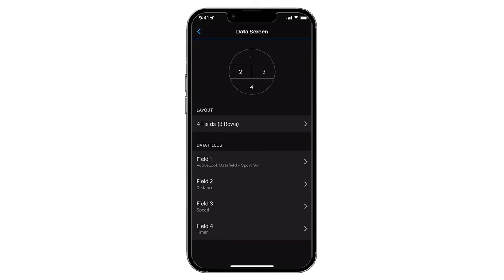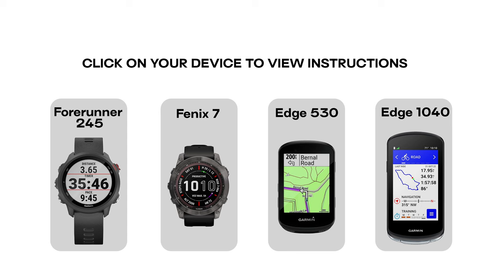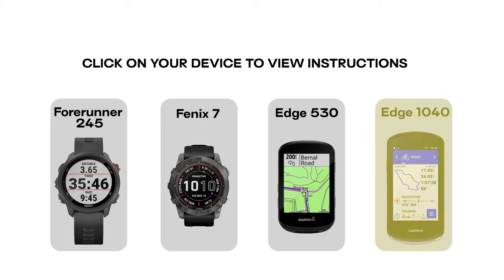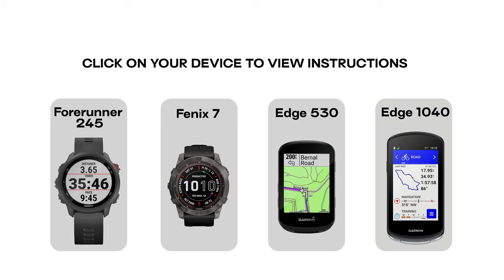From this point forward, the way to proceed depends on your device. We've prepared instructions for four representative devices. If your device isn't shown here, pick the one that is most similar. For example, if you have the Edge 1030, follow instructions for the Edge 1040. If you have the Phoenix 6, follow instructions for the Phoenix 7.